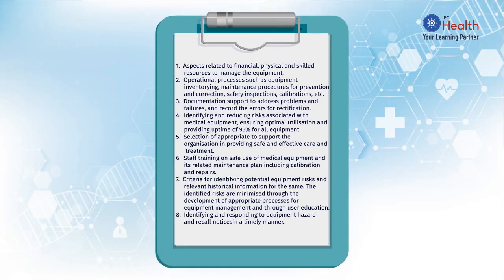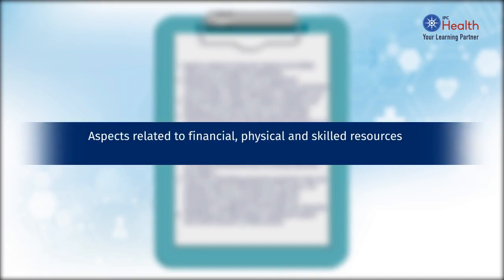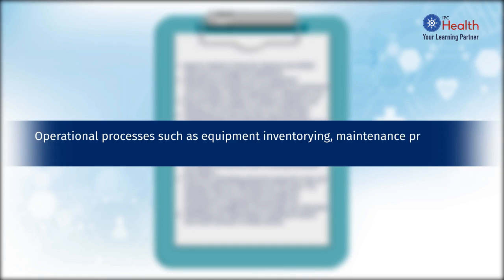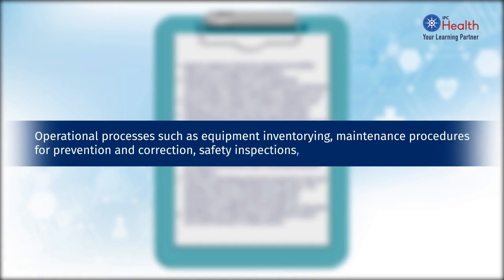The equipment management program includes aspects related to financial, physical, and skilled resources to manage the equipment. Operational processes such as equipment inventory, maintenance procedures for prevention and correction, safety inspections, calibrations, etc.